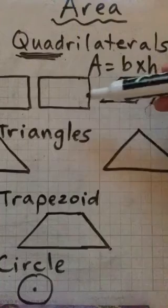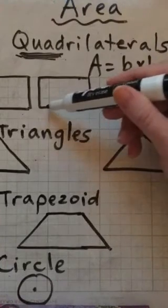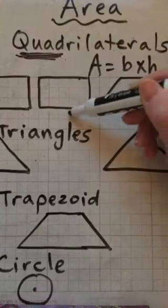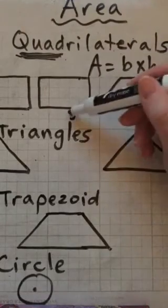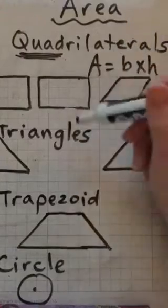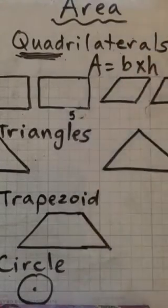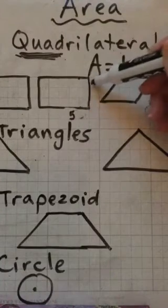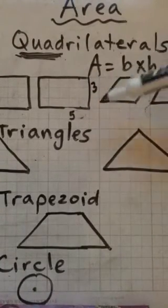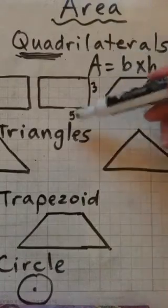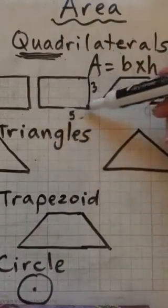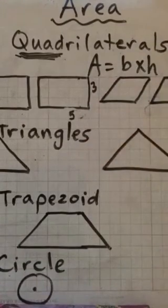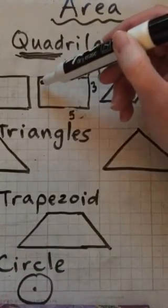So let's look at this one. This has a base of five units - five little squares across. Now our height would be one, two, three. So if we were to plug these in, area equals the base, the bottom base is 5, the height is 3. So 5 times 3 is 15.